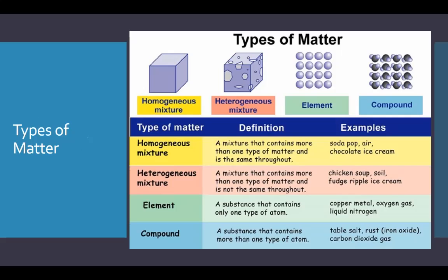There are three main types of matter when we go ahead and start looking at phases, but here we're going to look at the concept of element, compound, homogeneous, and heterogeneous mixture. Remember homo prefix means same, hetero prefix means different. A homogeneous mixture is one that contains only one type of matter — it is the same throughout, so it's evenly distributed.